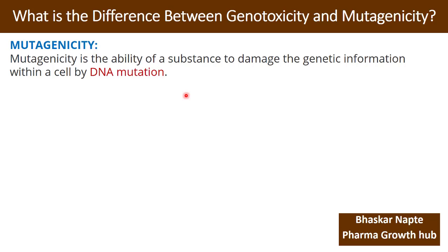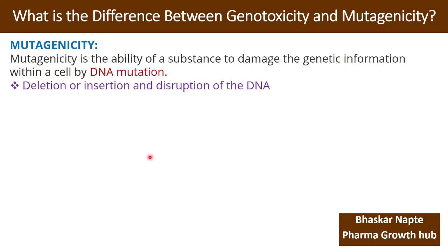Let us understand exactly what DNA mutation means. Either the deletion, insertion, or disruption of the DNA structure is called DNA mutation. The substance which brings about this process is called a mutagenic substance, and this entire process is called mutagenicity — the mutation of DNA.